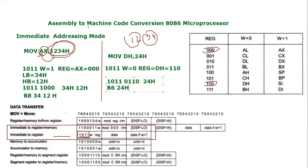One thing I wanted to specify: the last instruction MOV AX, 1234h was a three-byte instruction — B8 is one byte, 34h is one byte, and 12h is another byte. This instruction MOV DH, 24h is B6 24h, which is a two-byte instruction. This follows the variable-size instruction format we already studied in the 8086 microprocessor — MOV AX, 1234h takes three bytes in memory while MOV DH, 24h is only a two-byte instruction.